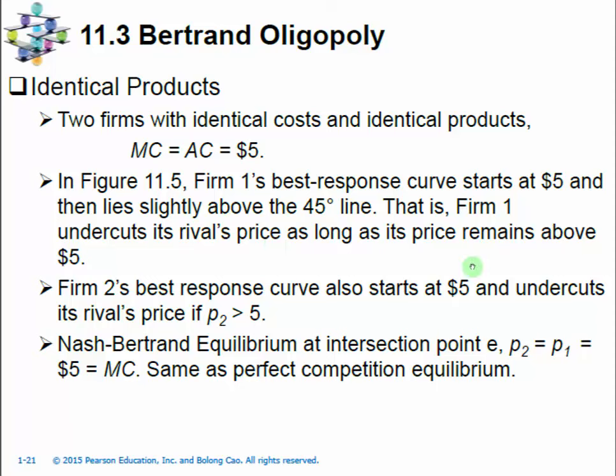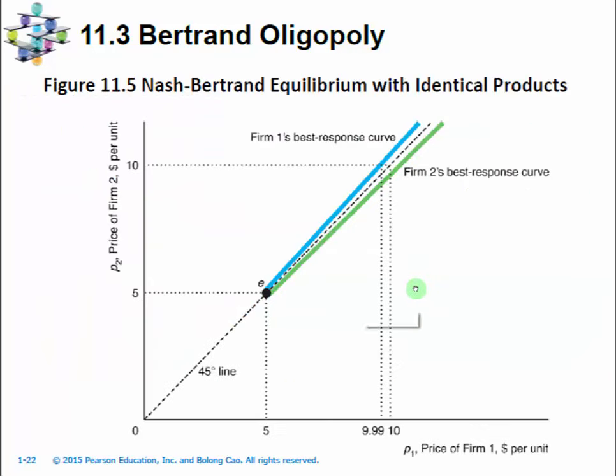The idea is that the firm in Bertrand competition with the lower price will be able to take over the complete market because the two firms are offering identical products. So as long as the price is above the marginal cost, there is an incentive for the firm to cut the price a bit compared to its competitors and take over the whole market. In Figure 11.5, we have these two identical firms who have the same cost structure and are producing identical products.